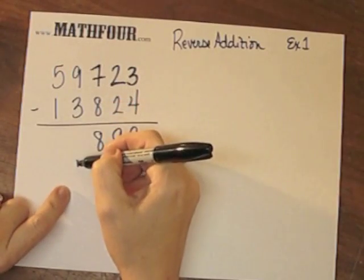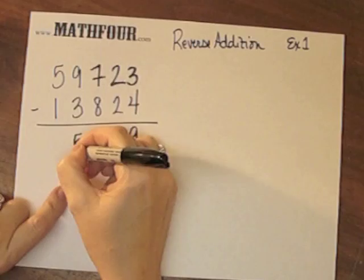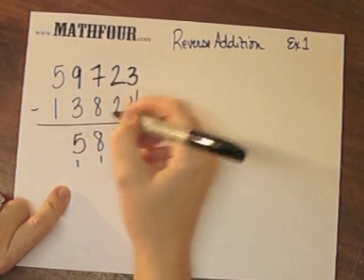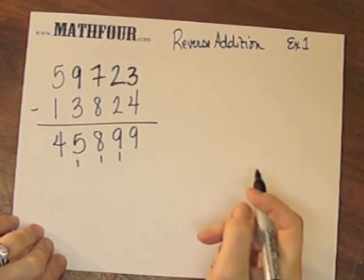3 plus 1 is 4 plus what gives me 9 or 19? Well, 3 plus 1 plus 5 gives me 9. No carrying. 1 plus 4 is 5, and there I have it.